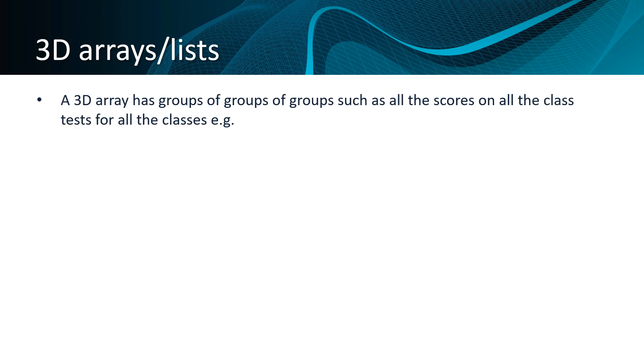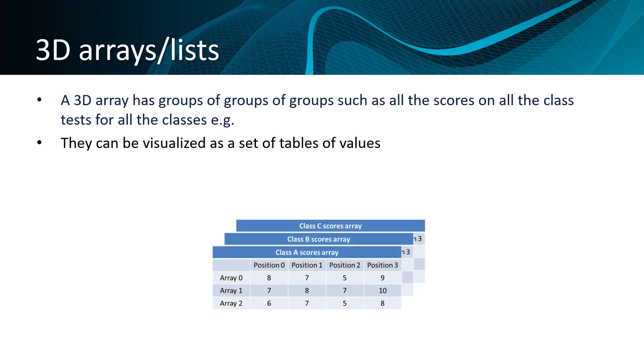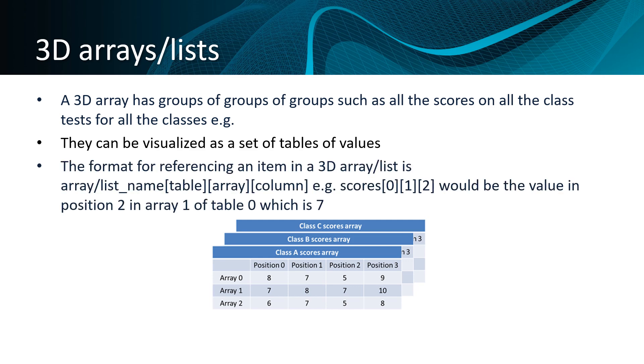A 3D array has groups of groups of groups. This means it's an array that contains elements which are themselves arrays, which themselves contain elements that are arrays. They can be visualized as a set of tables. The format for referencing an item in a 3D array or list is the array list name, then in square brackets, which table we want to access, then which array in that table we want to access, and then which column in that table we want to access. So scores[0][1][2] would tell us to go to the table in position 0, in this case, class A scores array, and then go to array 1, and then go to position 2 in that, and you can see in this case the value of that is 7.